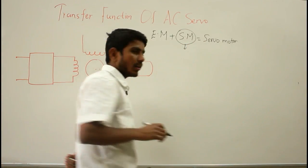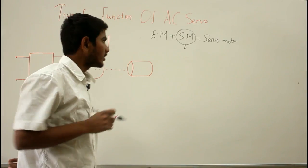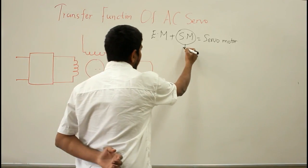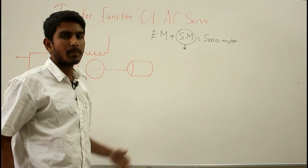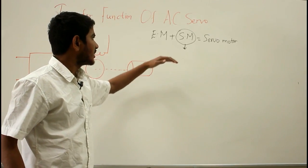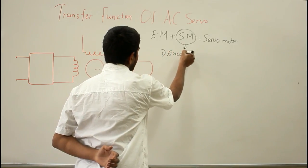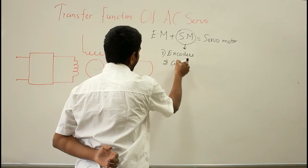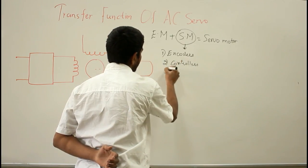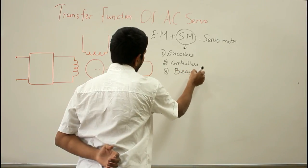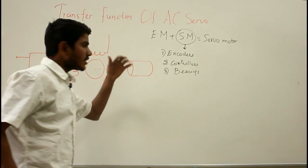The servo mechanism is the mechanism employed for controlling the positional accuracy of the motor shaft output. The special purpose components employed for your servo mechanism are: encoders or speed sensors, controllers, and bearings to change the speed of the motor.